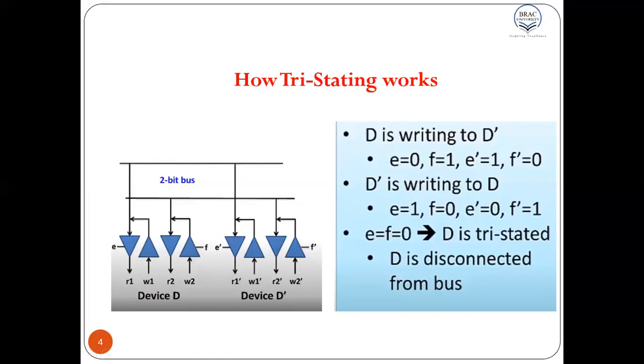This state is useful, for example, when device D is not about to involve any bus transaction and let's say device D' is communicating with a third device that is not shown in this diagram.